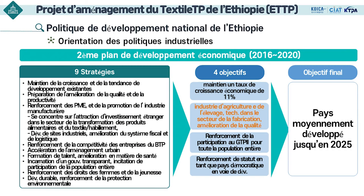L'objectif final est de devenir un pays à revenus intermédiaires d'ici 2025. À cette fin, le pays maintient un taux de croissance économique annuel moyen de 11%, améliore la technologie et la qualité des produits dans l'industrie agricole et manufacturière et déploie ses efforts pour que tous les citoyens participent au plan GTP et pour renforcer son statut en tant que pays en développement.